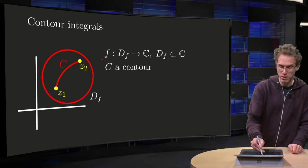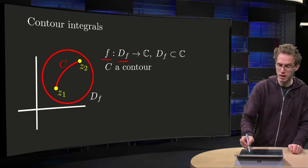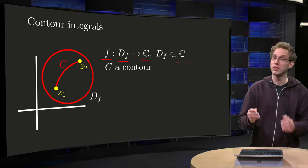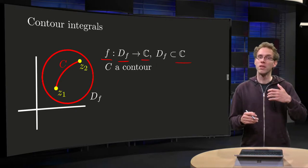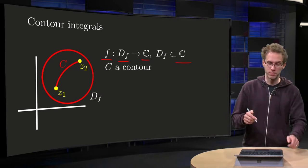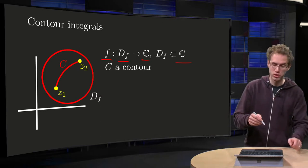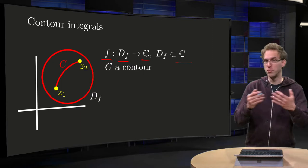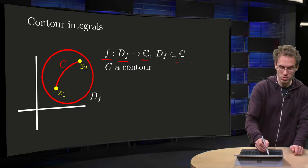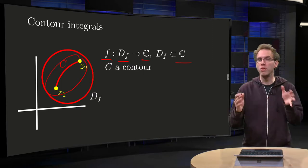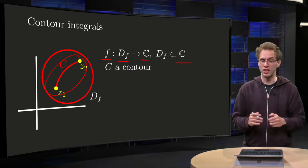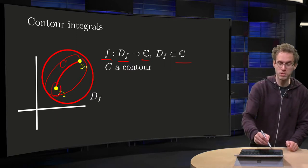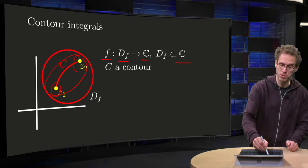We have a function f from a domain containing C to C, where C is a contour. So that means that we have a piecewise continuous arc. The domain must be such that contour C is fully contained inside D, and the start point is called z1 and the end point is called z2.